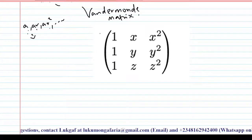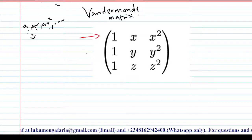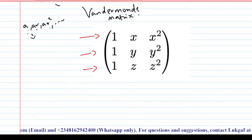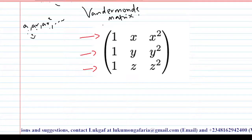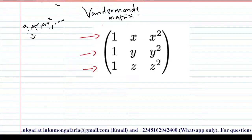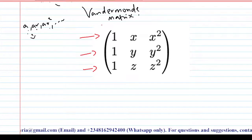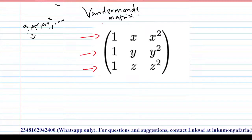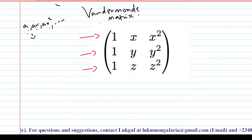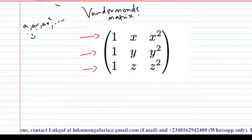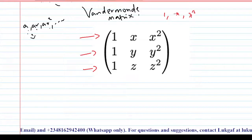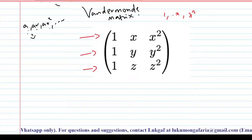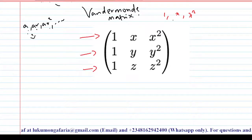Likewise, if you check this type of matrix — for example, if you check row 1, row 2, row 3 — you will notice that they are also having the same structure. If you observe them carefully, you will notice that their structure is in terms of a geometric progression.